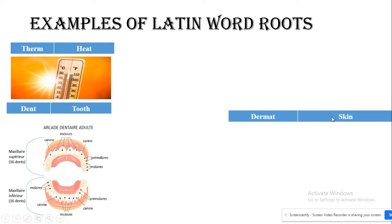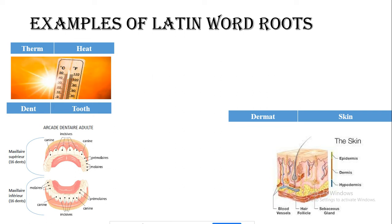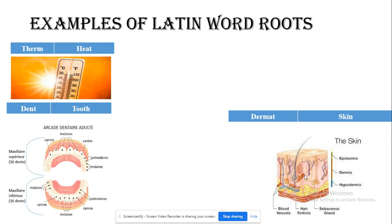'Dermat' — anything containing 'dermat' is related to the skin. For example, 'dermatology' is the study of the skin. Look here: we have the epidermis (outer skin layer), dermis (the inner skin layer), and hypodermis (the fatty layer under the skin). 'Epi-' is added in front, so epidermis means surrounding the skin; hypodermis means under the skin. The skin also contains hair follicles and sebaceous glands.